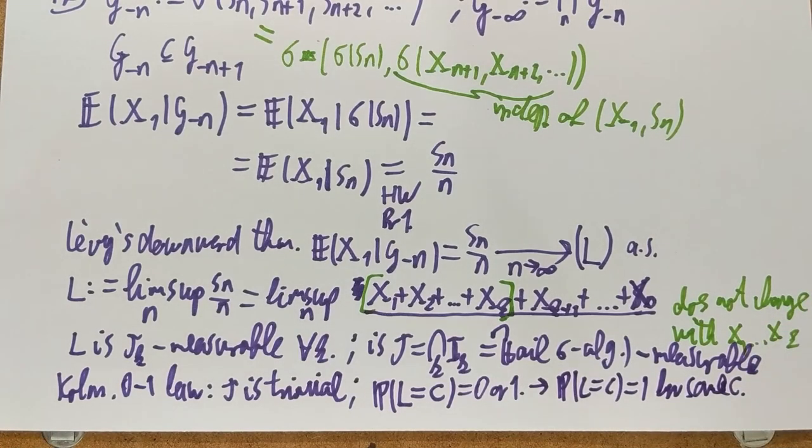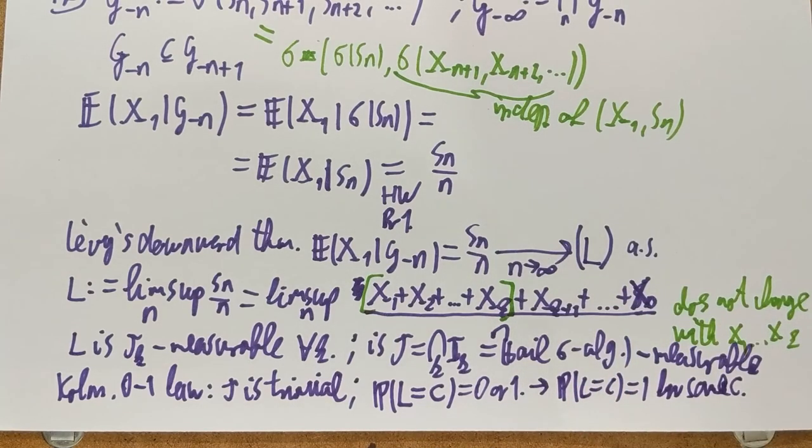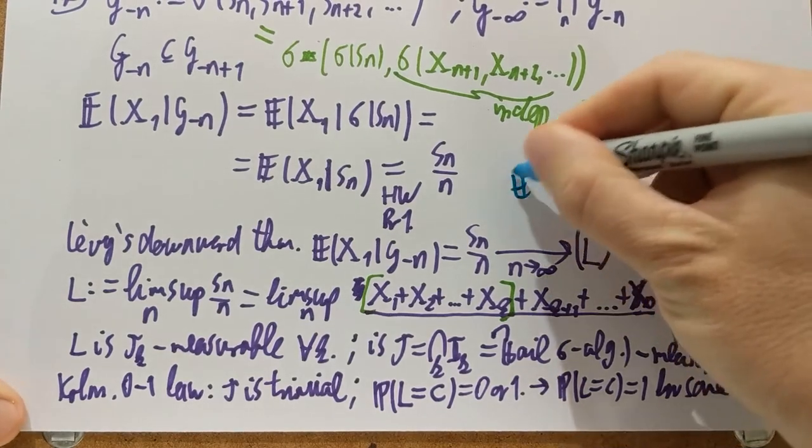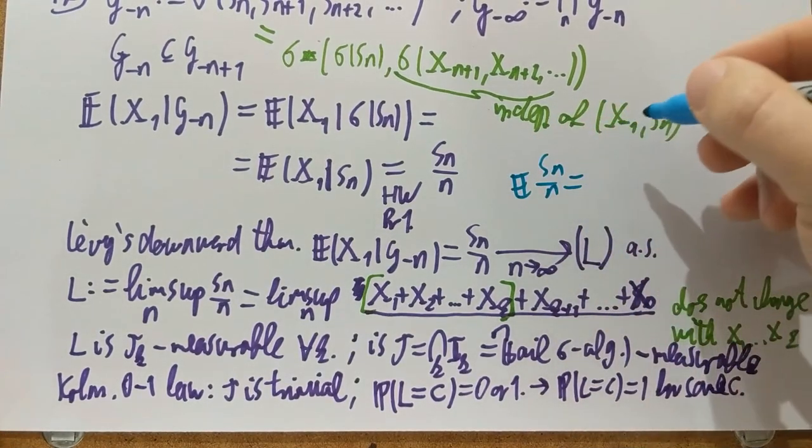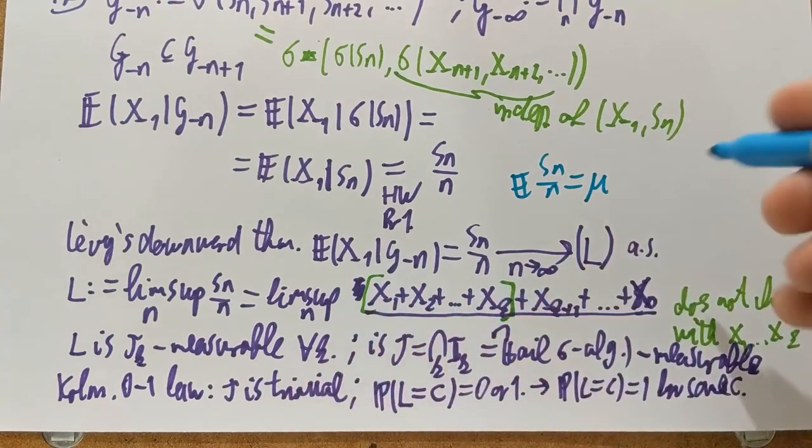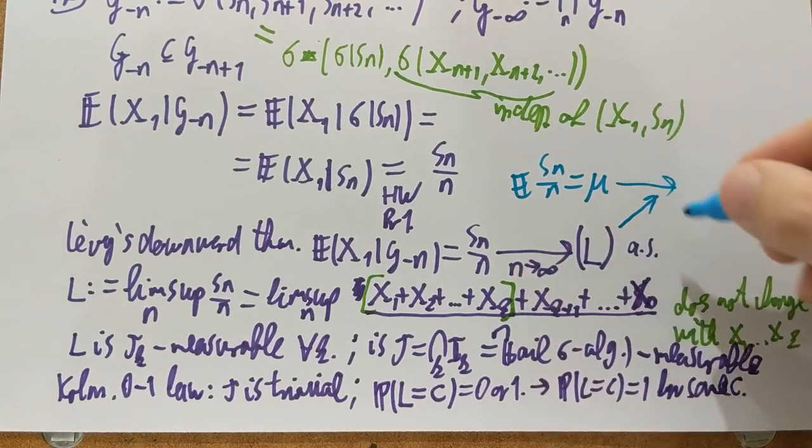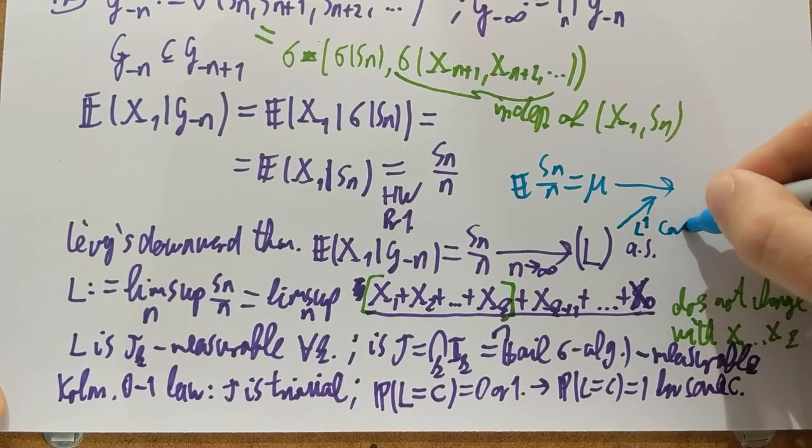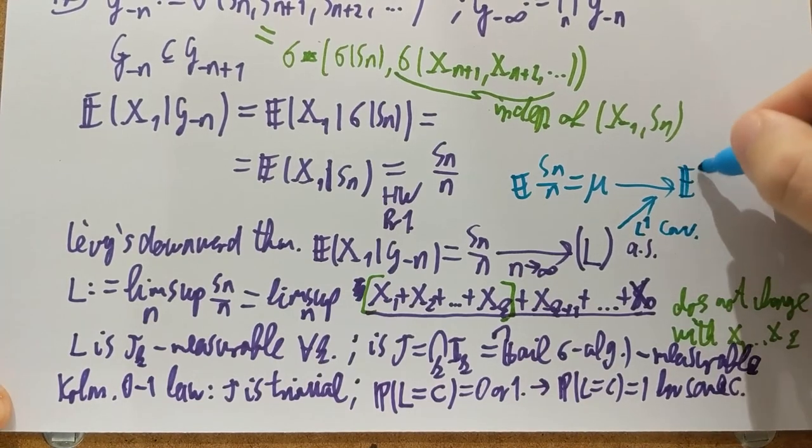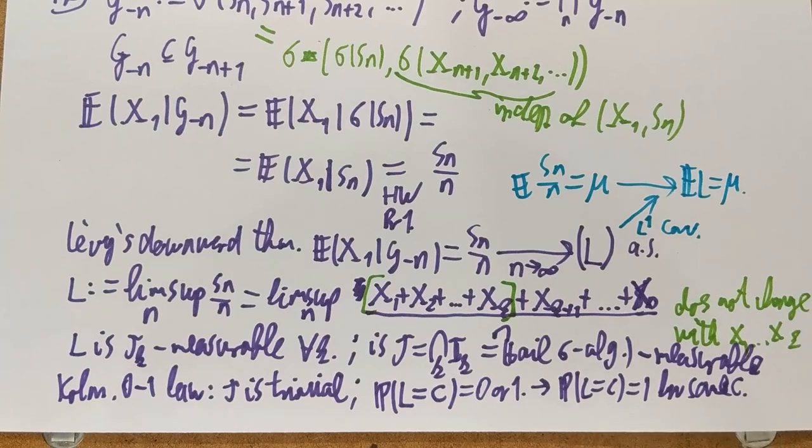But what can that C be? Well, the expectation of L is of course mu. Because of the L1 convergence. And the expectation of S_n over N. Let me write this out in a different color. The expectation of S_n over N is for every fixed N is this mean mu of the IID random variables. So the expectation of L must also be mu. So it follows from here and there. Because we also have L1 convergence here. Right? So it's not only almost sure. It's also L1 convergence. It follows that the expectation of L must be also mu. So what can that constant C be if the expectation needs to be mu?